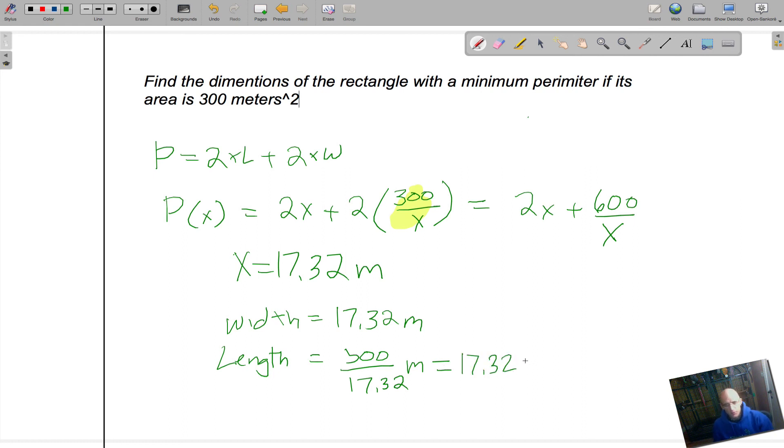And, if you multiply 17.32 meters, so we actually have like a square here. so, when you add it all up, you get approximately, 69.28 meters. so, that's the minimum perimeter. And the dimensions are 17.32 by 17.32 meters, which is what the question was actually asking.